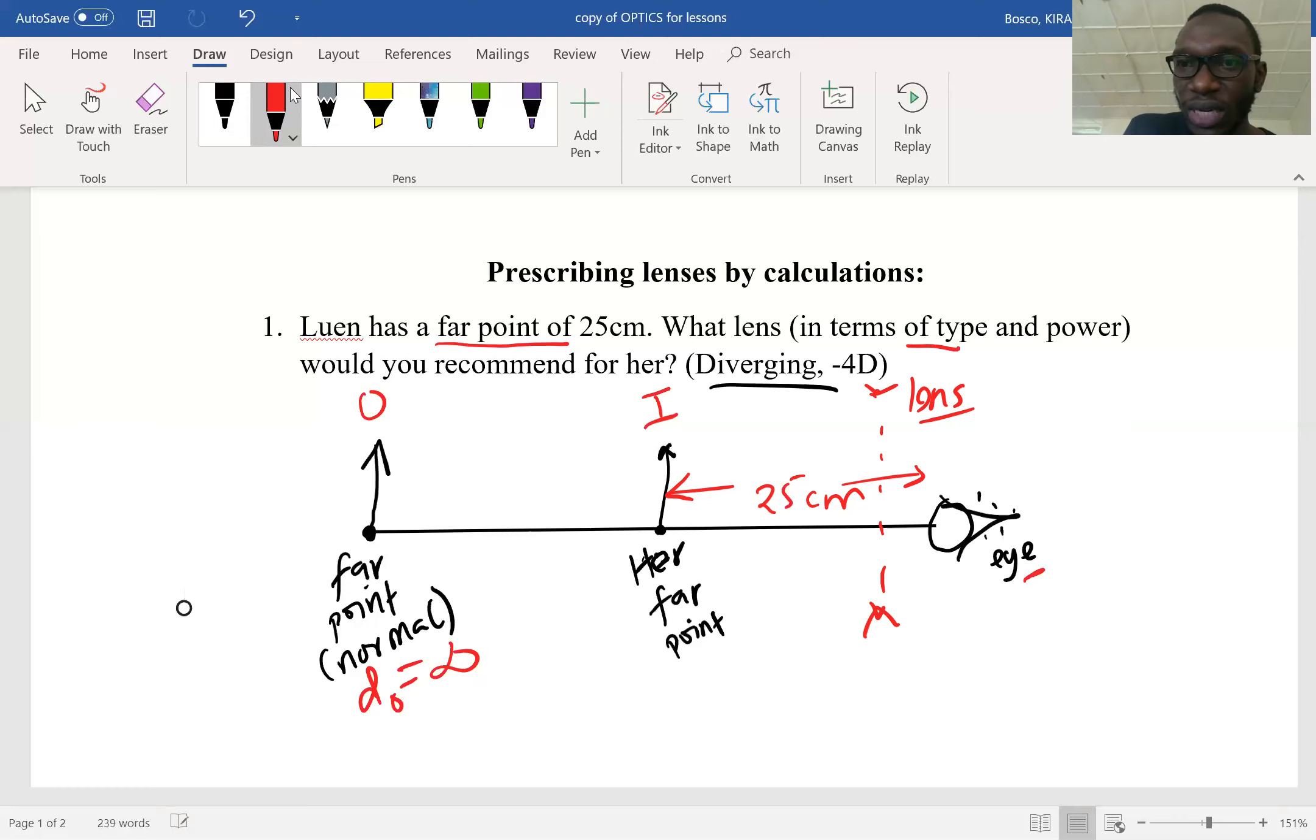We want to know the type of the lens and the focal length of the lens, and the focal length should be in meters. Therefore our d_image here is 25, and it's negative because the object distance and object image are all on the same side of the lens. It is going to be negative 0.25 meters.